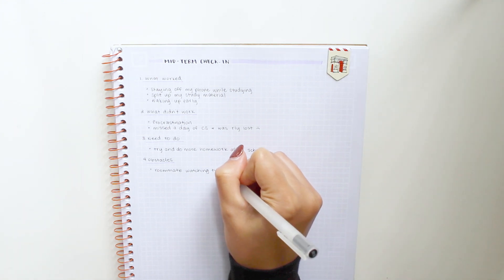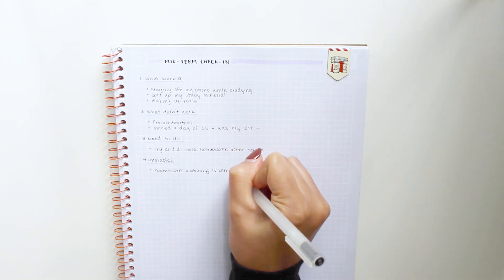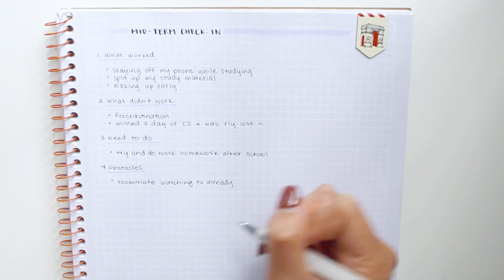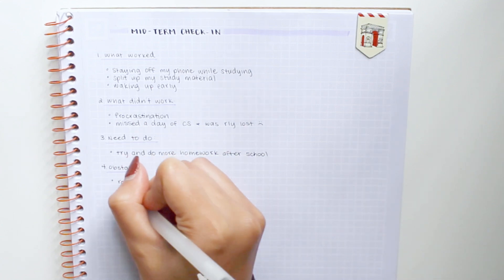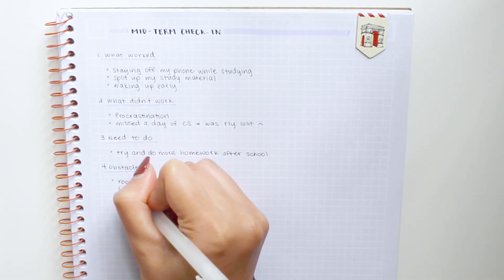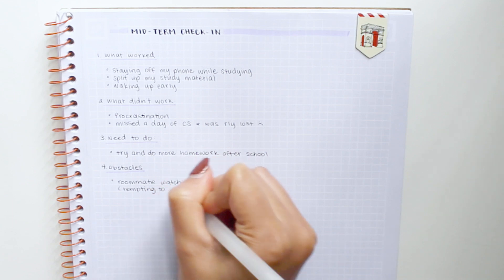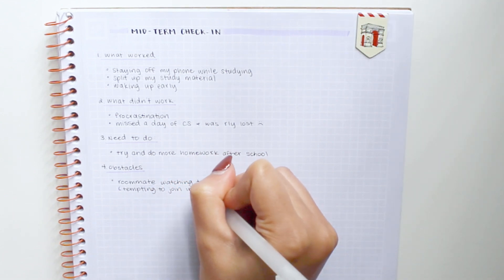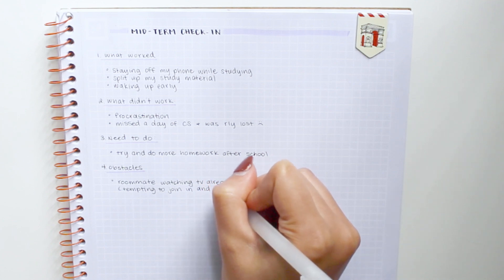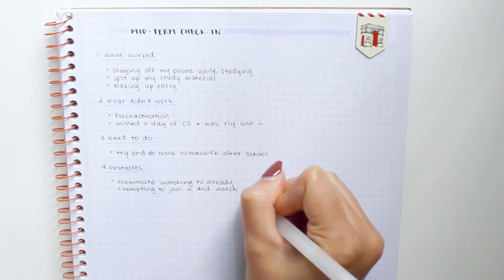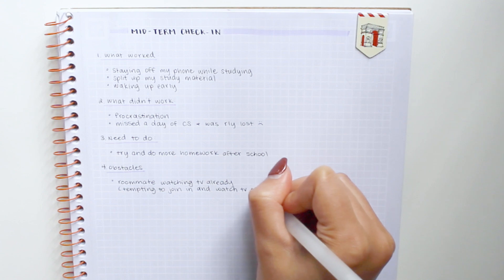Or more specifically, whenever you come home from school and your roommate is already sitting on the couch watching TV, you get really tempted to sit down and watch with her. You can work around that by just being honest with her. Let her know that you'd like to start procrastinating less, and that if she could put off watching TV until after you've started homework, that would help you out a lot. The more specific you get, the better equipped you will be to overcome those obstacles.